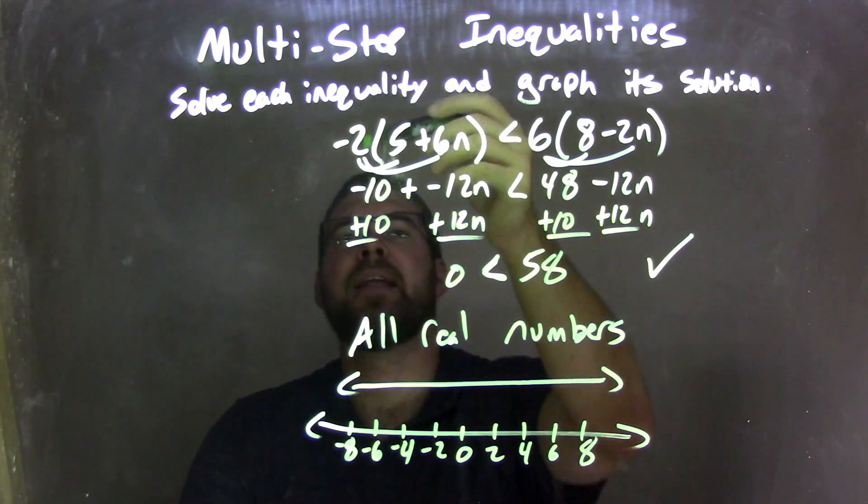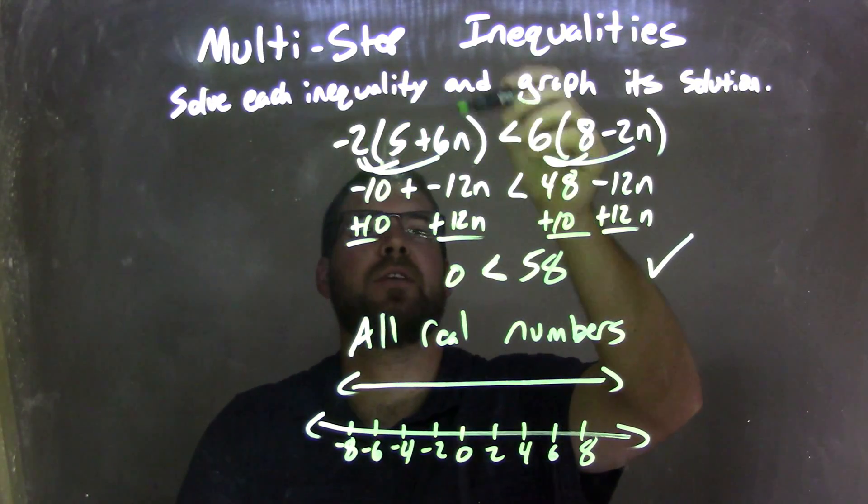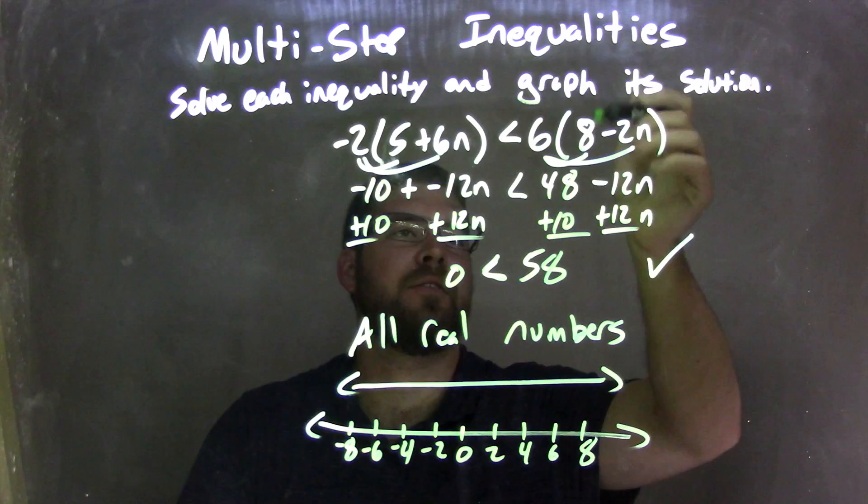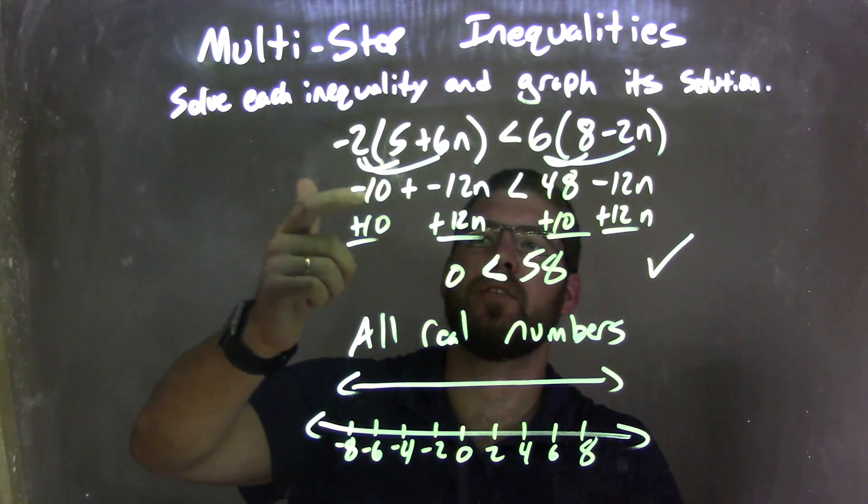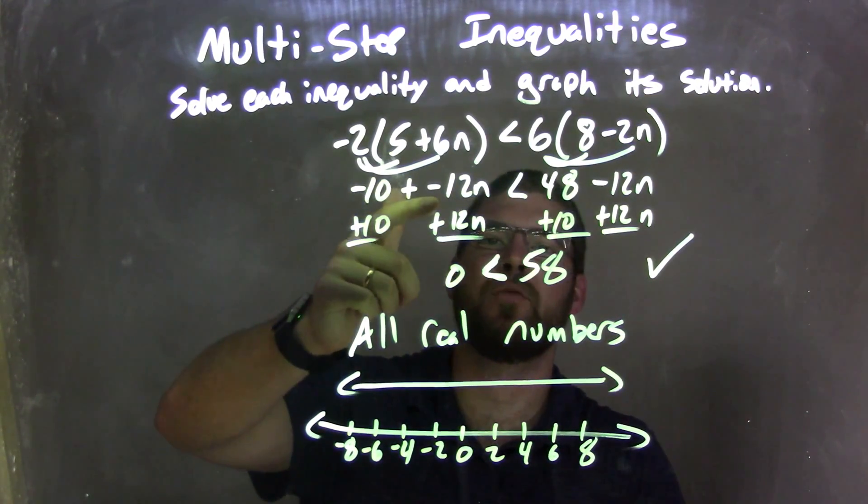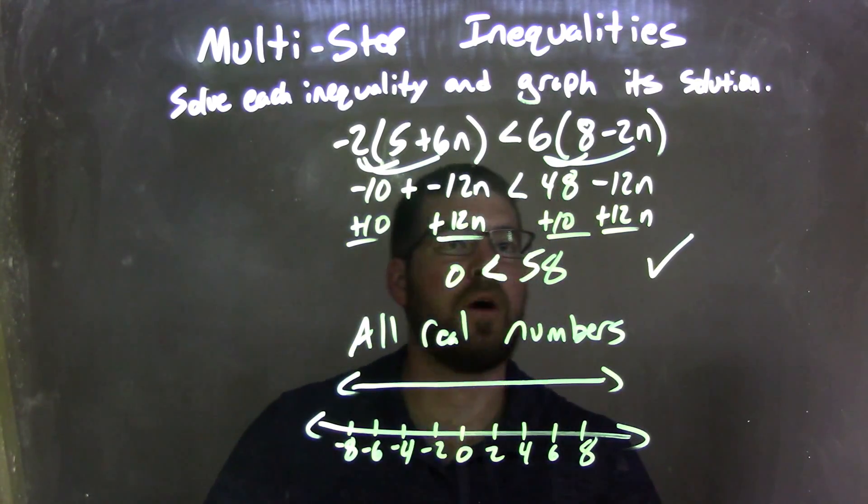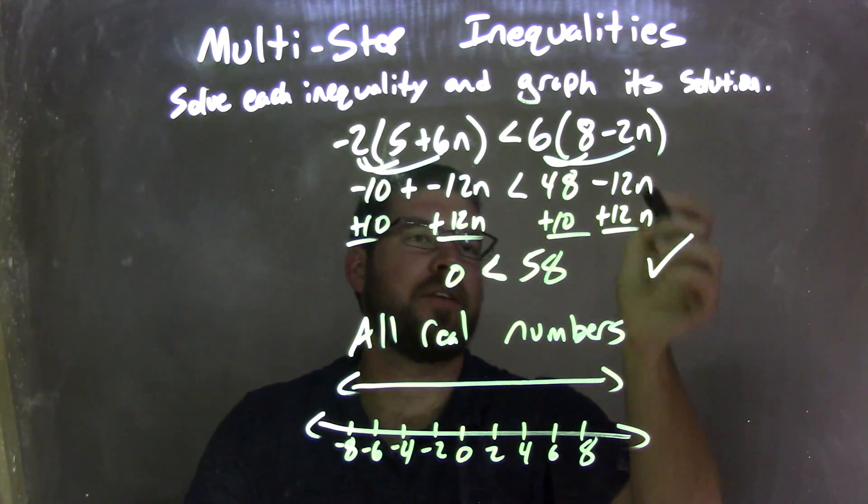So let's recap. We're given negative 2 times the quantity 5 plus 6n is less than 6 times the quantity 8 minus 2n. I distributed the negative 2 across, giving me negative 10 plus negative 12n is less than 48 minus 12n. And on this one here I distributed the 6 across.